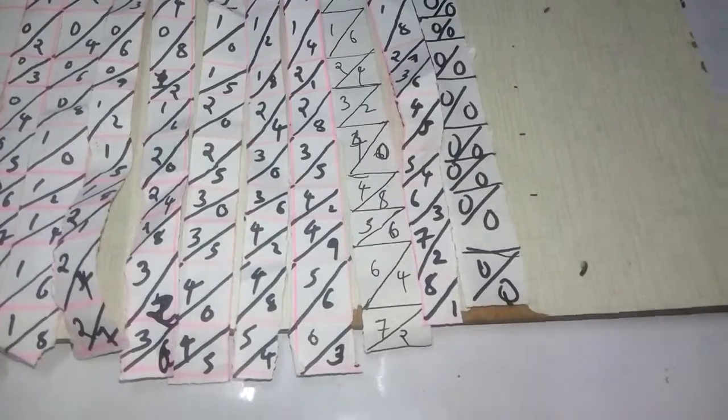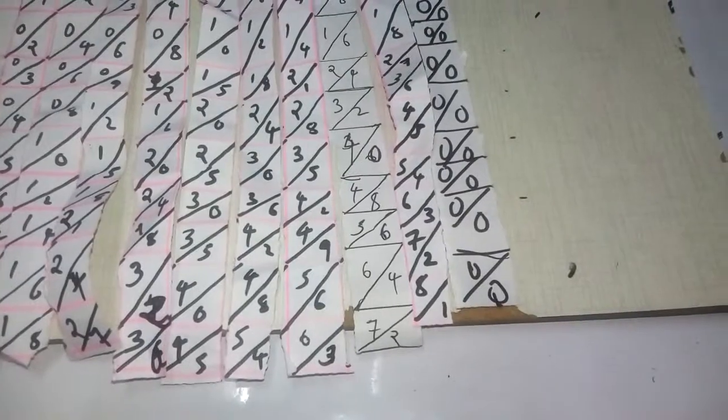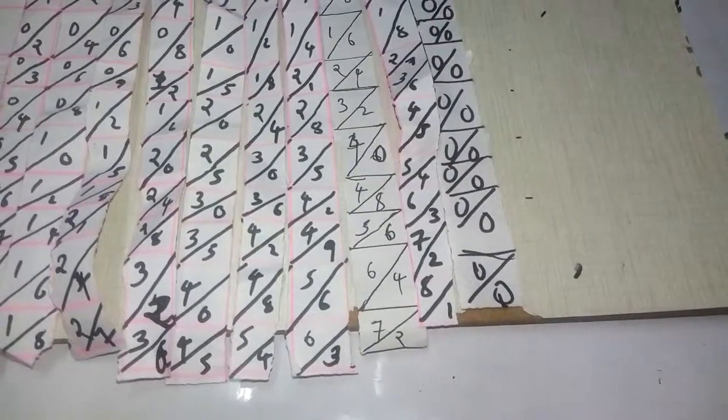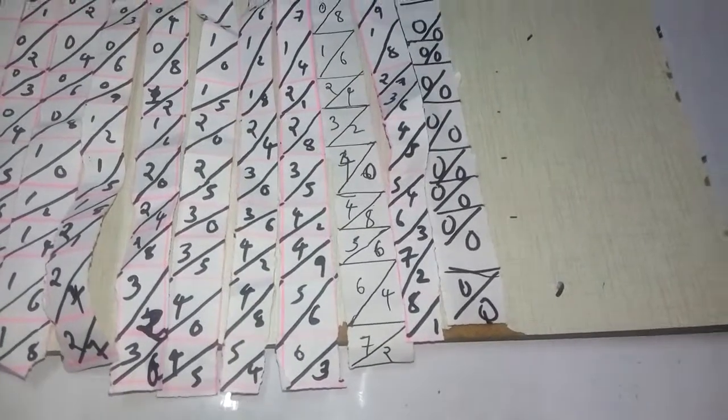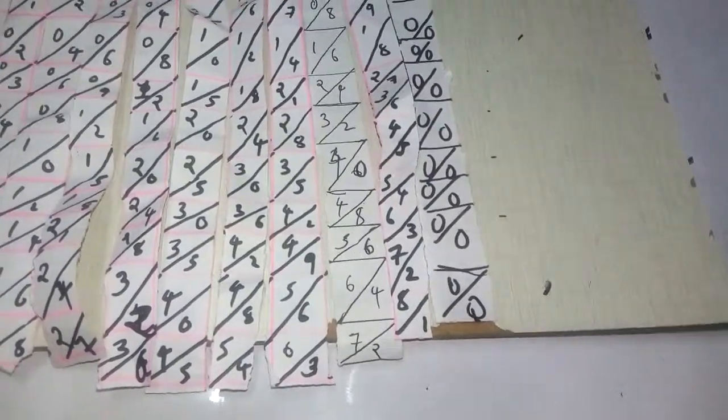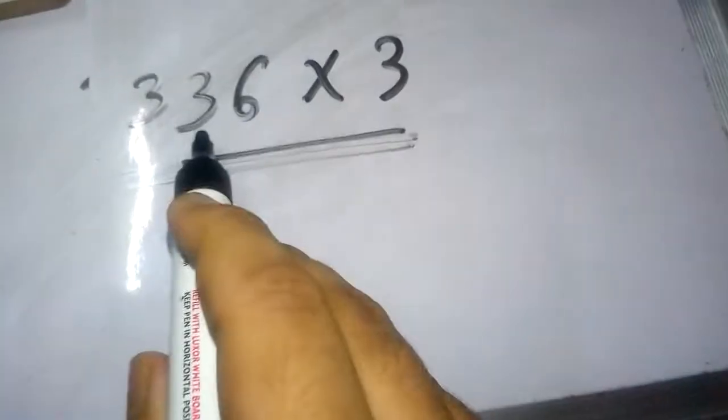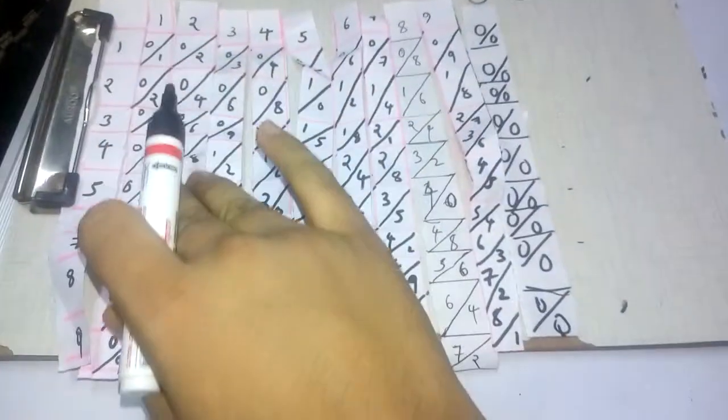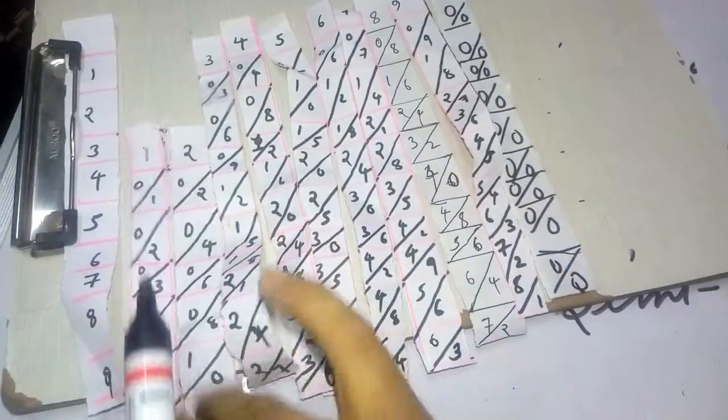Napier's Bones are used to multiply a single digit number with larger numbers. Let us take a number: I've taken 336 into 3. You should multiply this with 3.